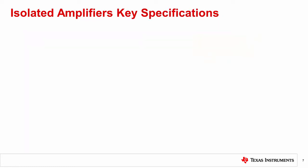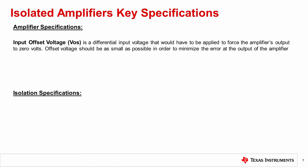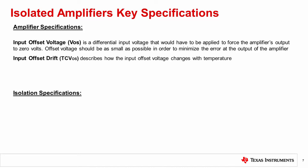When choosing an isolated amplifier, both amplifier and isolation specifications have to be considered. Let's start with defining input offset voltage. Input offset voltage is a differential input voltage that would have to be applied to force the amplifier's output to zero volts. Offset voltage should be as small as possible in order to minimize the error at the output of the amplifier. Keep in mind that the input offset voltage is dependent on changes over temperature, which is quantified by input offset drift.